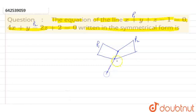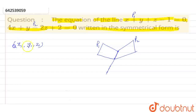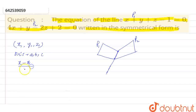To write the equation of a line in symmetrical form, suppose a line is passing through point (x1, y1, z1) with direction ratios a, b, and c. So the equation of line in symmetrical form is going to be: (x minus x1) by a equals (y minus y1) by b equals (z minus z1) by c.